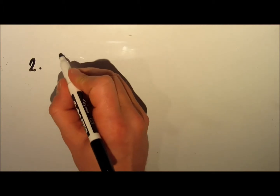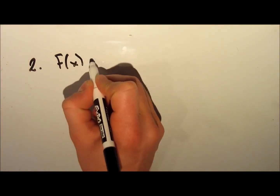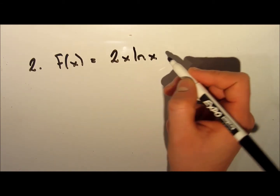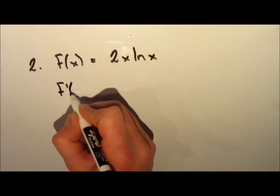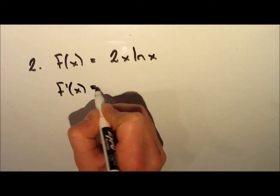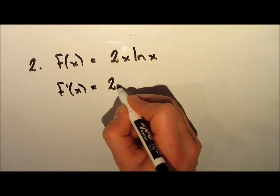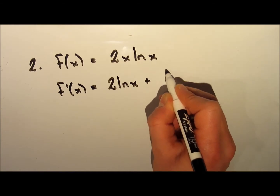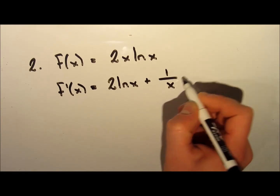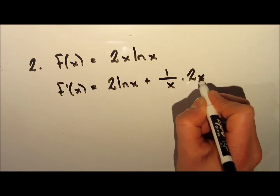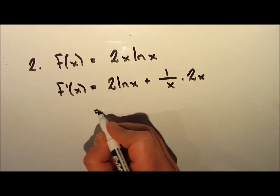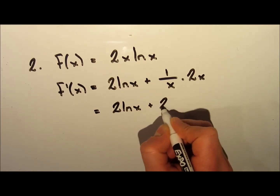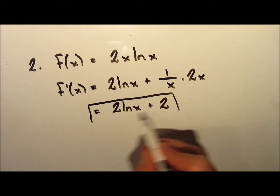Let's check out another problem. We have f(x) equals 2x multiplied by ln of x, so we're going to have to use the product rule. We take the derivative of the first term, which is 2, multiplied by the second term, ln of x, and add it to the derivative of the second term, 1 over x, multiplied by the first term, 2x. Simplifying, this becomes 2 ln(x) plus 2.